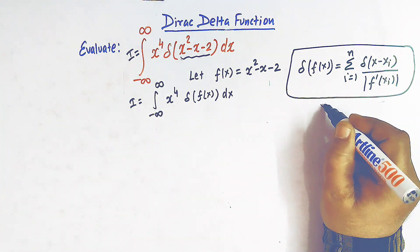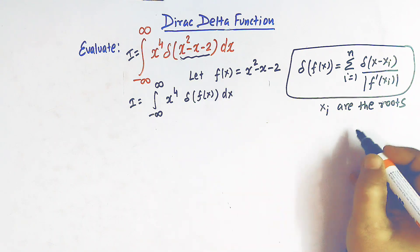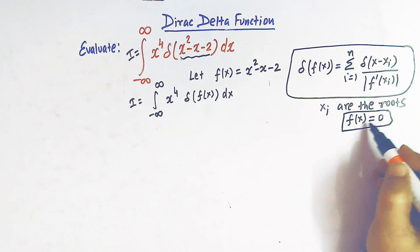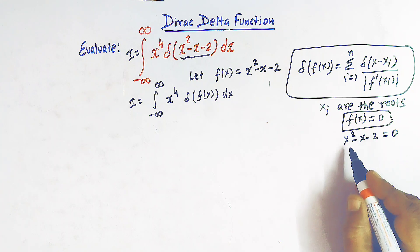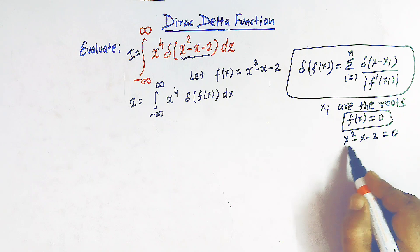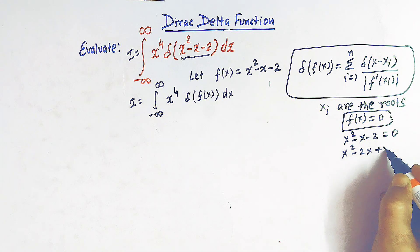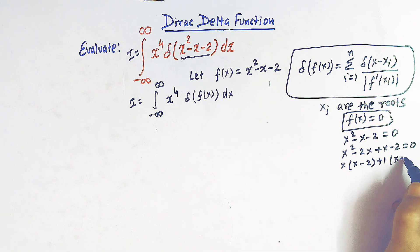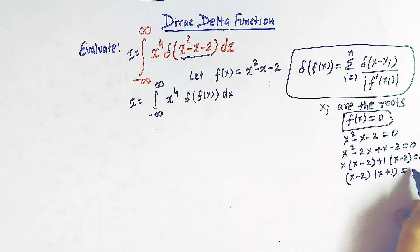The x_i's are the roots of the equation f(x) = 0, that is x squared minus x minus 2 = 0. This is a quadratic equation we can solve by splitting the middle term: x squared minus 2x plus x minus 2 = 0, giving us x(x minus 2) plus 1(x minus 2) = 0, so (x minus 2)(x plus 1) = 0.